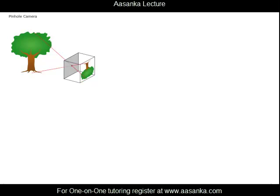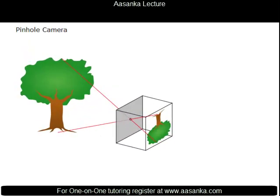Suppose you have a tree in front of a pinhole camera. What essentially is a pinhole camera? You have this cardboard box. You have a screen here where you see an inverted image of the tree, and there is a small hole on the opposite side.